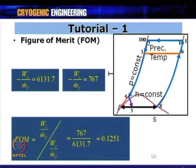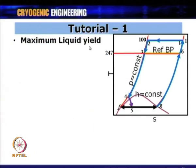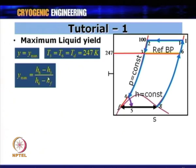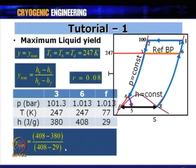The y_max occurs when the pre-cooling temperature equals the boiling point of R134A, which is 247 K. At this condition, T3 = T6 = Td = 247 K. From the formula y_max = (H6 − H3)/(H6 − HF), with r = 0.08, y_max = 0.074.